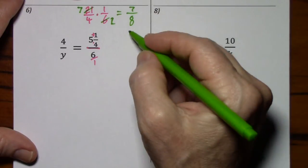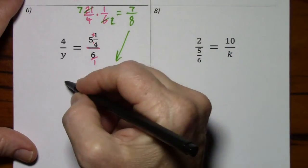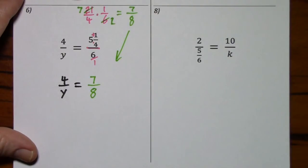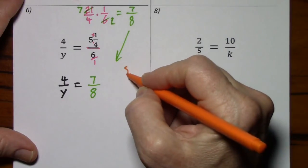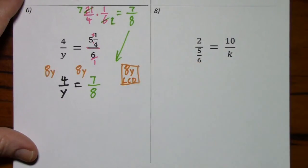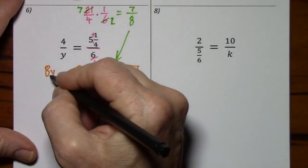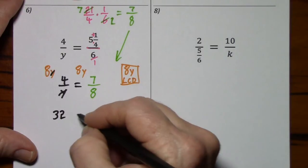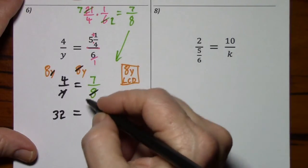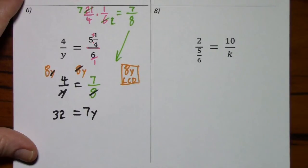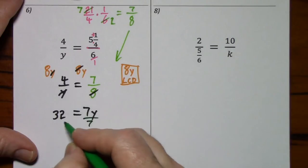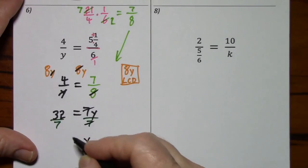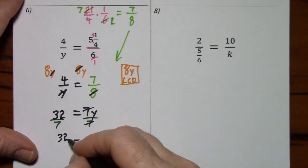That's a lot better. So I'll just write that down here. Bring down our 4 over y. Now we'll just multiply by 8y, which is our LCD. So the y's cancel. 8 times 4 is 32. The 8's cancel. You've got 7y. And now we'll just divide by 7 and divide by 7. Of course they cancel. y is equal to 32 sevenths.